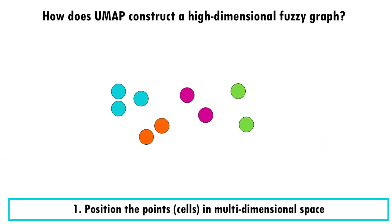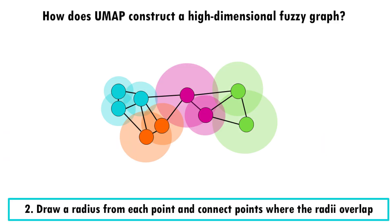When building the initial high dimensional graph, UMAP sets a different radius for each cell to determine which cells are connected versus not. It bases the size of the radii on the distance to each cell's nearest nth neighbor. This way, all cells are approximately connected to the same number of neighboring cells.